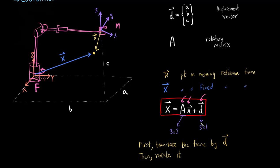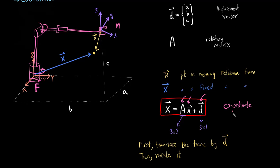The displacement vector is a 3×1 vector and the rotation matrix is a 3×3 matrix — we have talked a great deal about the rotation matrix in our previous video. So this is what coordinate transformation is: you express a point defined with respect to one coordinate system in terms of another coordinate system.